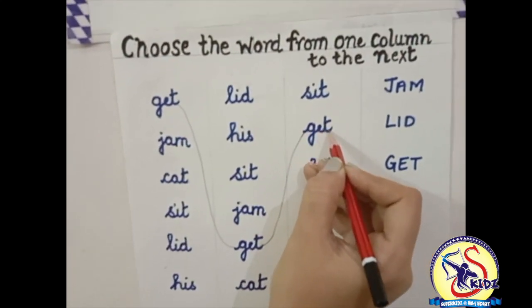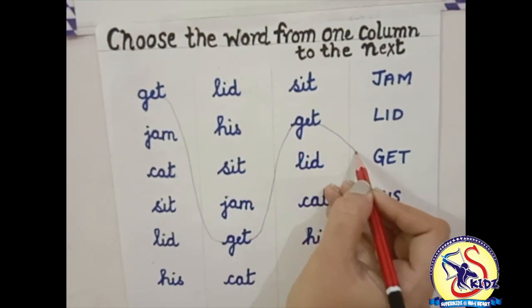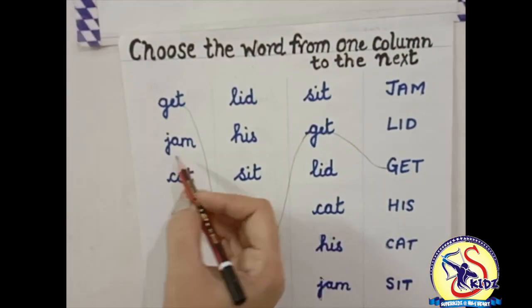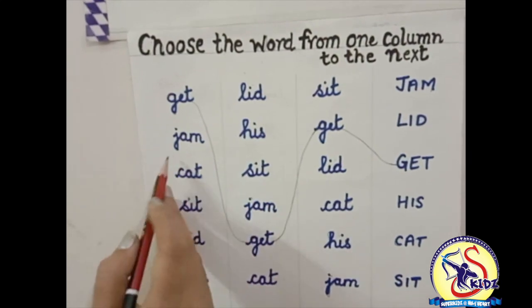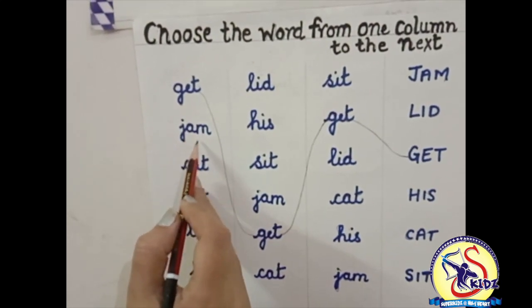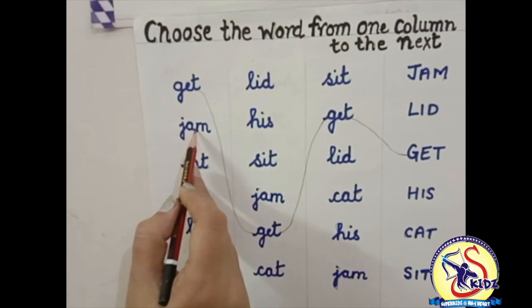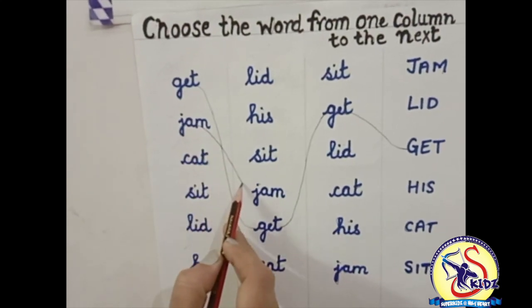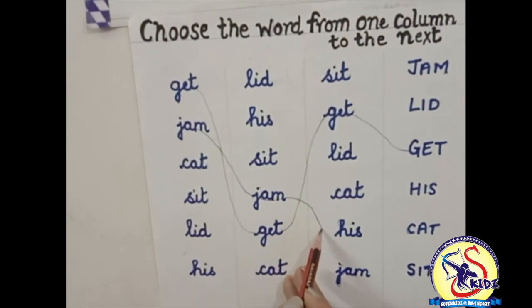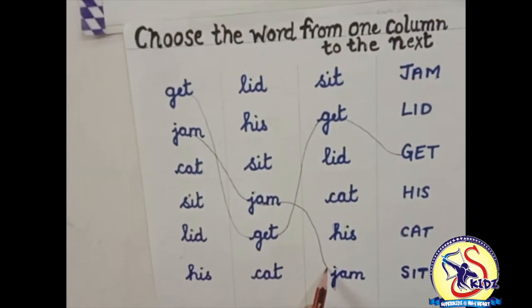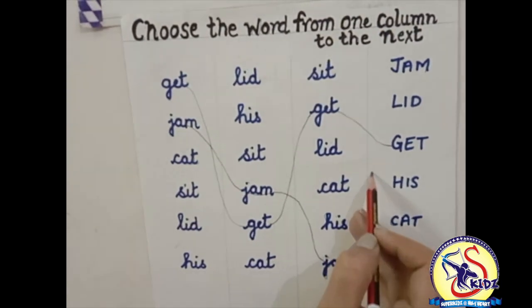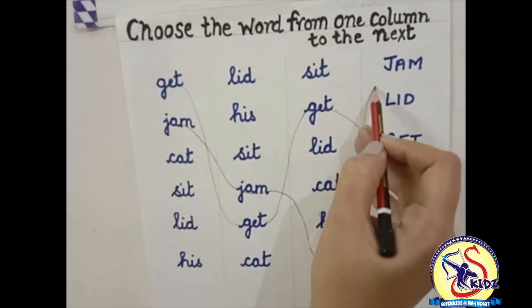Now next line — here the word get is written. Now move to the next word. Our next word is jam. Let's see where jam is written in the next line — yes, this is the word jam. Move to the next line — yes, this is the word jam. And here is the word jam.